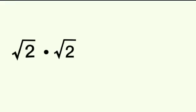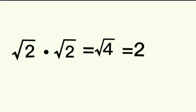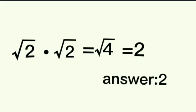So how do we solve multiplication of radicals? Square root of 2 times square root of 2: 2 times 2 is equal to 4, so it becomes square root of 4. Then we find the square root of 4, which is 2. So the answer is 2.